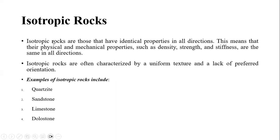Isotropic rocks are those that have identical properties in all directions. This means that their physical and mechanical properties, such as density, strength, and stiffness, are the same in all directions. These rocks are defined by their uniform texture, and they lack preferred orientation. They do not have foliations or lineations — their mineral grains are randomly distributed.